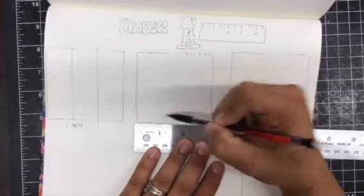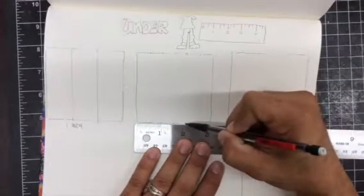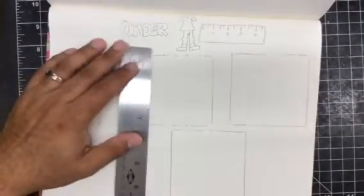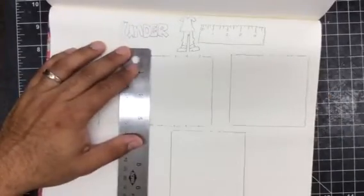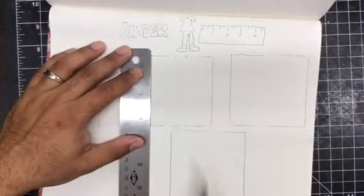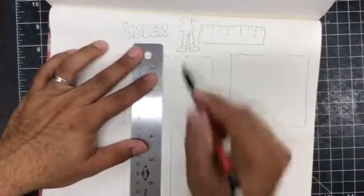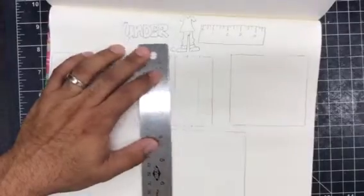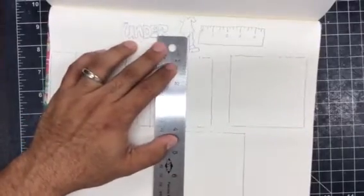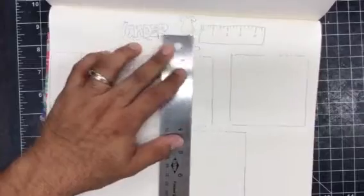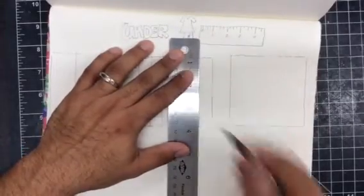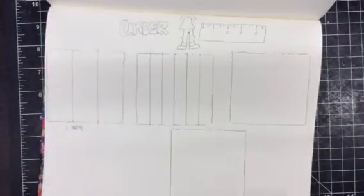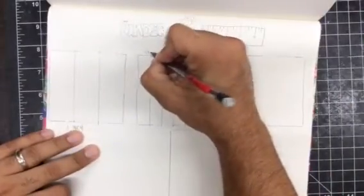Half, inch, inch and a half, two, two and a half. And then just like last time, just going to connect my lines. Use the ruler to create straight lines. Don't visually do this because for your project you're going to need straight lines. And then I want to label this one half inch.